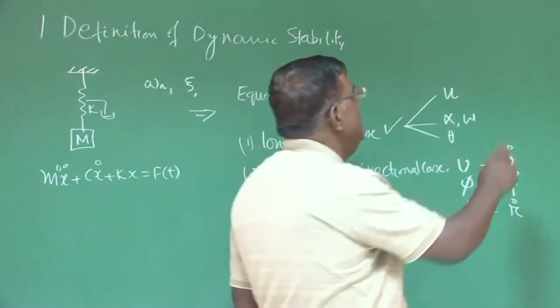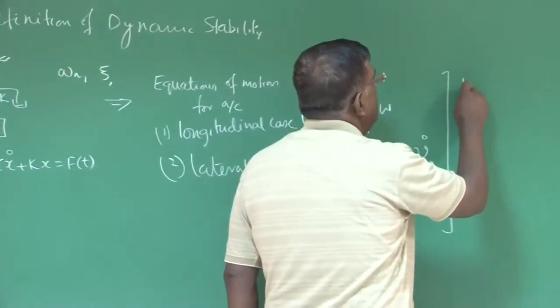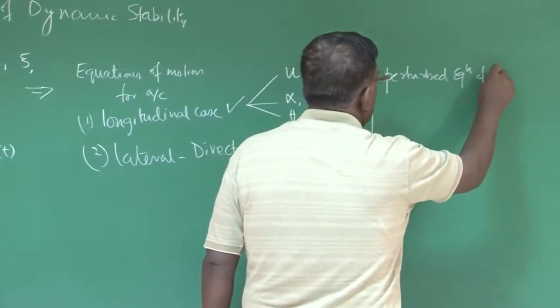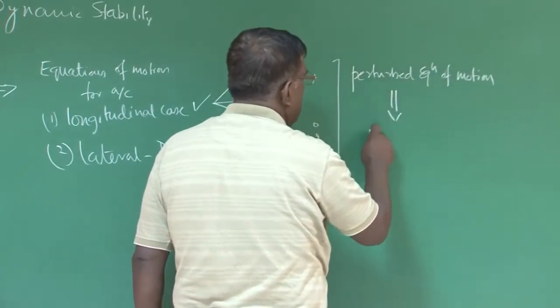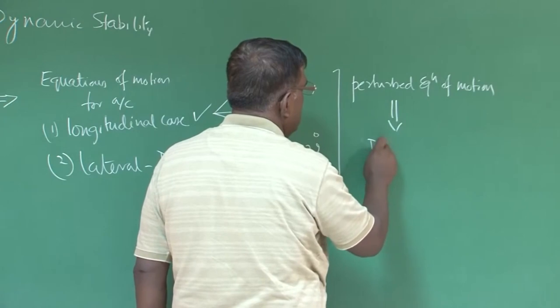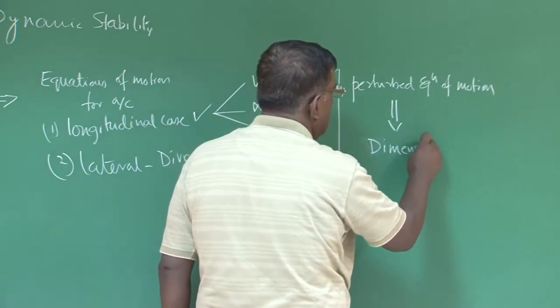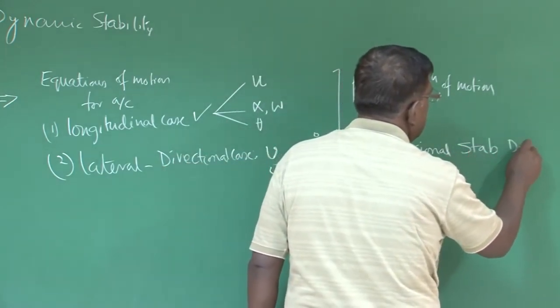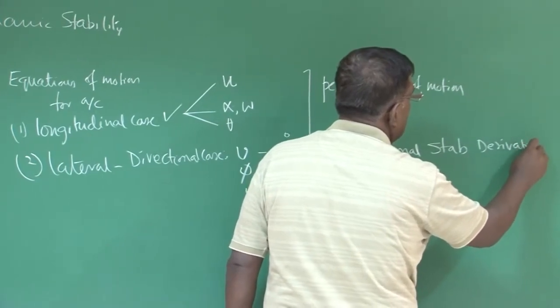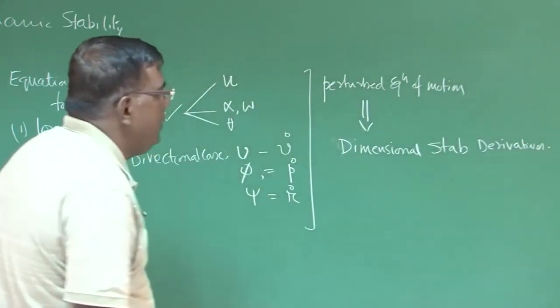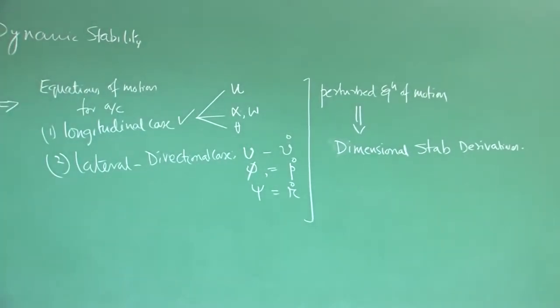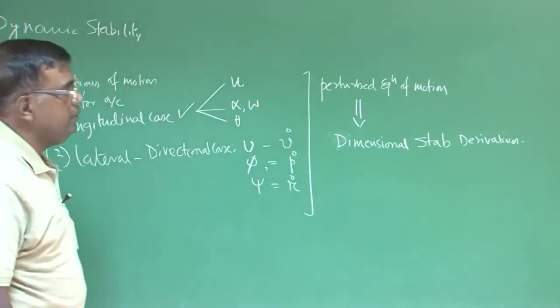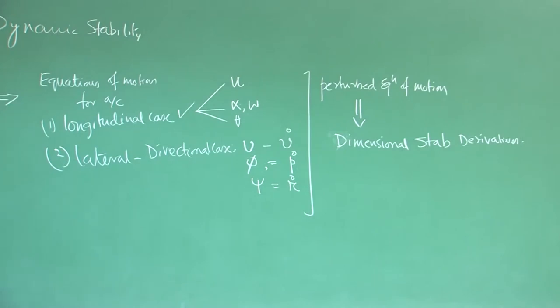After that, what we did, we developed perturbed equation of motion and defined dimensional stability derivatives. We tried to understand the sign and magnitude of each derivative. And we realized that these dimensional derivatives have dimension, like non-dimensional derivatives.